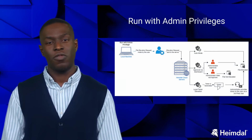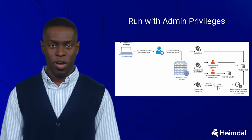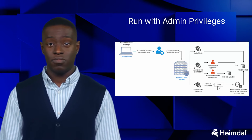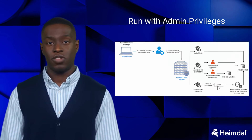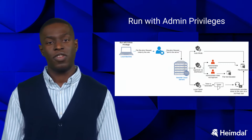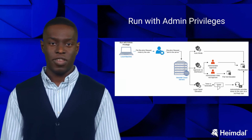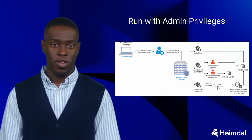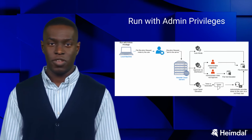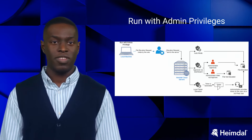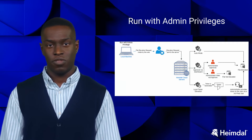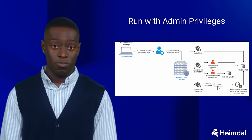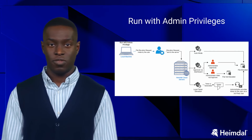The Run with Admin Privileges feature allows the user to right-click an executable file and run it with Administrator permissions. Run with Admin Privileges allows the user to run files such as .exe, .msi, .msc, .cmd, and .cpl on Windows, and .pkg, .dmg, .zip, and .app on macOS. The files are run by NT Authority\System by default when Run with Admin Privileges is used.